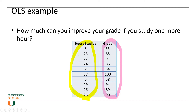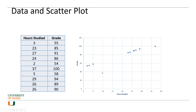For example, the first student studied only three hours and ended up with a grade of 55. But there was another student who studied 37 hours and ended up with a grade of 100. The very first thing you can do is create a scatter plot of these observations — a two-dimensional plot with hours studied on the x-axis and grade on the y-axis, and plot every point.